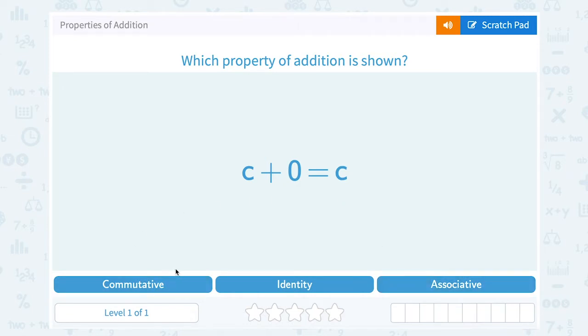So commutative means when you change the order. If they had swapped it and said C plus 0 equals 0 plus C, that would have been commutative property.